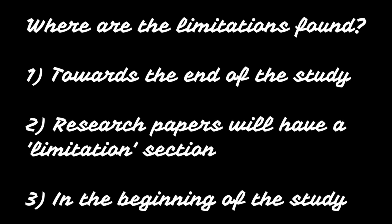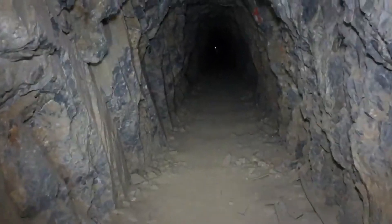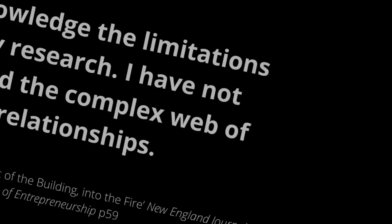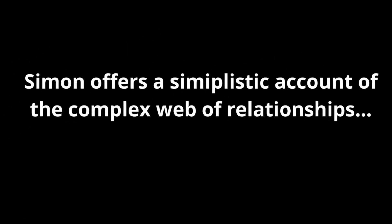Research papers will have a dedicated limitations section, and it is very difficult to find a research paper that doesn't state its limitations. Sometimes at the beginning of the paper, the author will state the scope of their study and discuss why their scope is limited. The important point is that critique is not only found outside of the academic paper — sometimes the paper can be used as a weapon against itself. For example, Mark Simon stated in his paper: 'I acknowledge the limitations of my research. I have not detailed the complex web of relationships.' Armed with Simon's limitation, you can now launch a critique: 'Simon's study fails to detail the complexities of the relationships' or 'Simon offers a simplistic account of the complex web of relationships.'